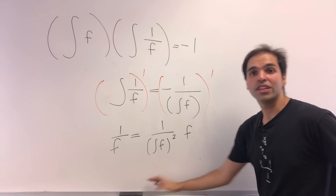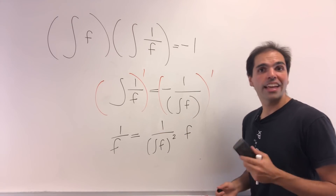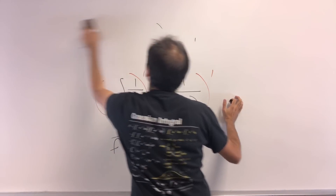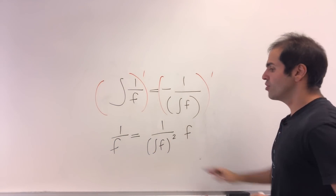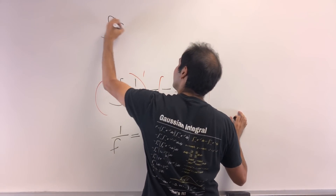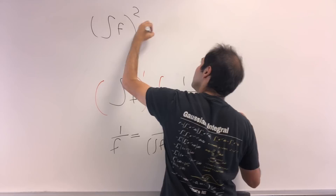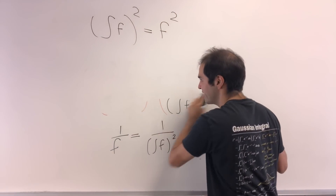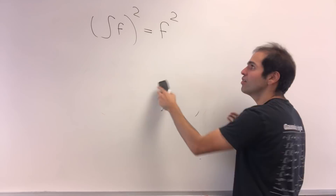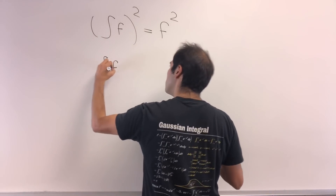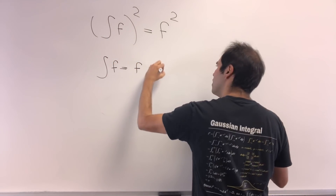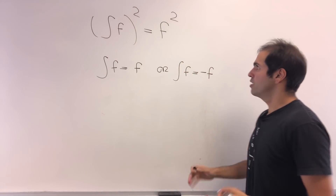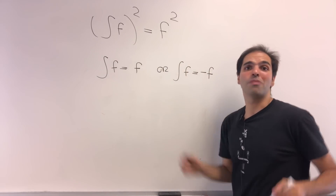And now the nice thing is we can cross-multiply and get a particularly nice identity. If you cross-multiply, you simply get integral of f squared equals f squared, which simply means one of two things: either the integral of f is f, or the integral of f is minus f. That's nice, and that's because we chose minus 1 at the beginning.